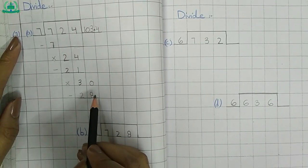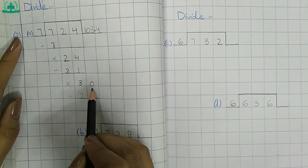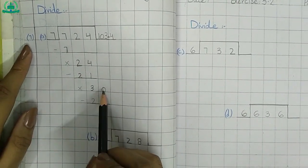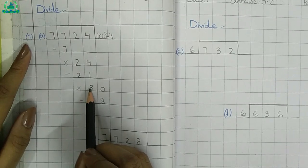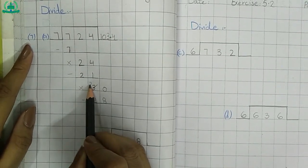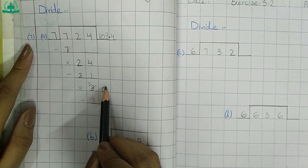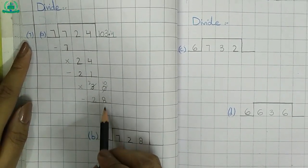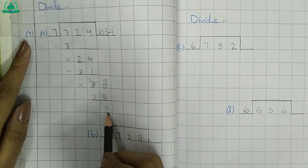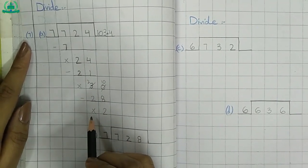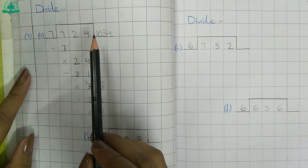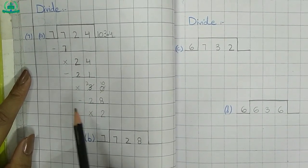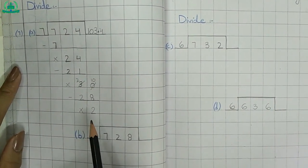Minus: we cannot subtract 8 from 0, so we borrow 1 from 3. 2 is left here, and 0 becomes 10. 10 minus 8 is 2, remainder is 2. 2 minus 2, no remainder. We count only 1 digit after the decimal. We cannot completely solve this question, so we stop at this step.